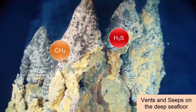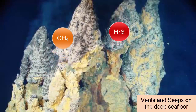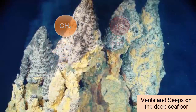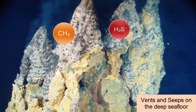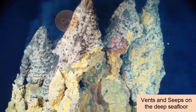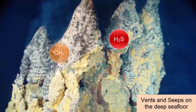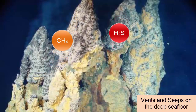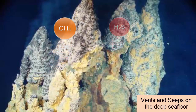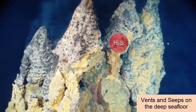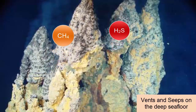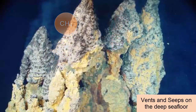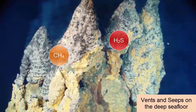In hydrothermal vents and hydrocarbon seeps on the bottom of the seafloor, bacteria capture energy from hydrogen sulfide or methane gases and use that energy to synthesize sugar. These bacteria provide the base of an exotic and diverse food web.